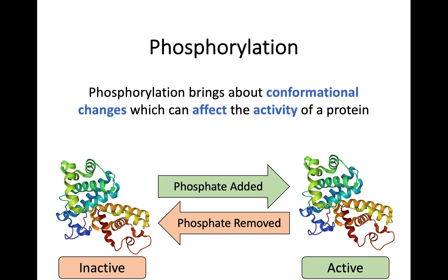Throughout this sub key area the key theme is that any conformational change — whether from ligand binding, allosteric modulation, or phosphorylation — will affect the activity and function of a protein. This will be very important as we move into the next key area. Make sure you're happy with protein structures, amino acid R group categories, modulators, allosteric sites, and cooperativity. We'll be moving on to key area 3 next time.